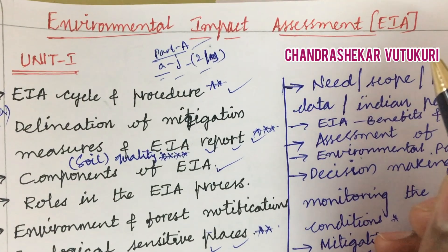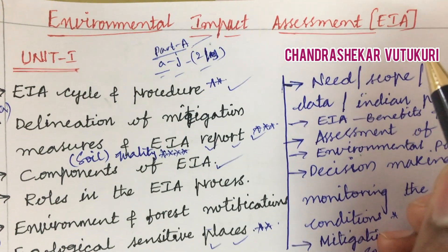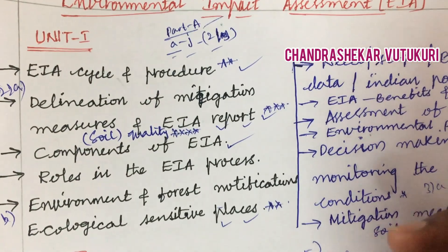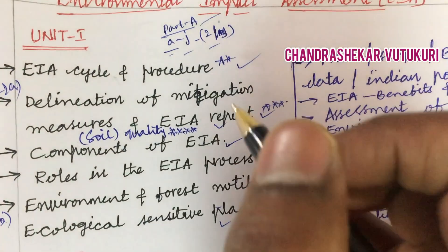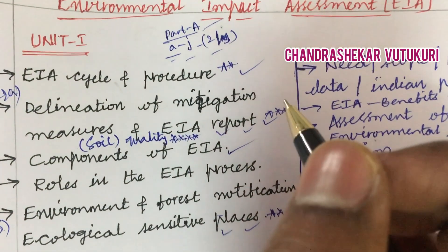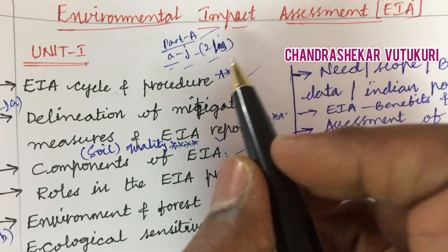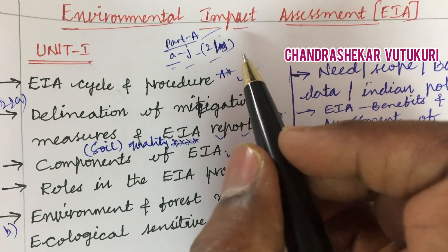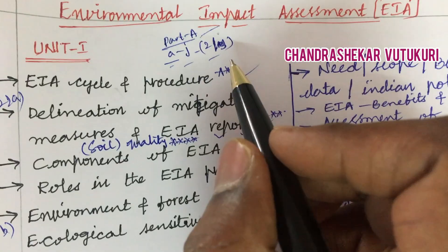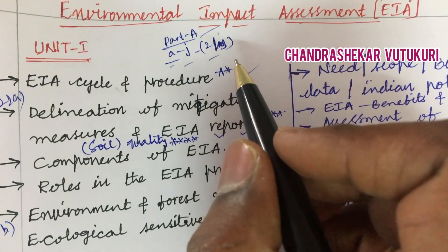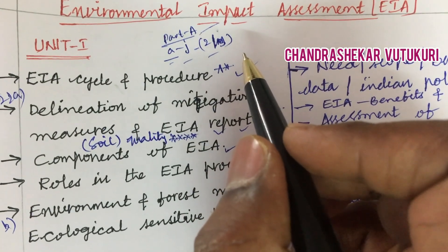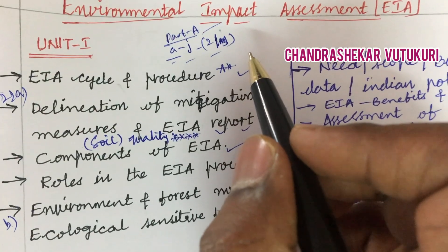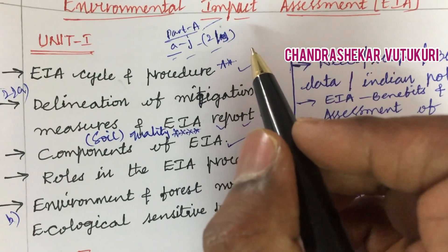This course is all about theory in its structure, and you are supposed to work out each and every question in bullet points — do not write in paragraphs. The question paper pattern covers Part A and Part B. Part A consists of short questions A to J worth 2-3 marks (25 marks total), and Part B has long questions 2-11 worth 10 marks each (50 marks total).